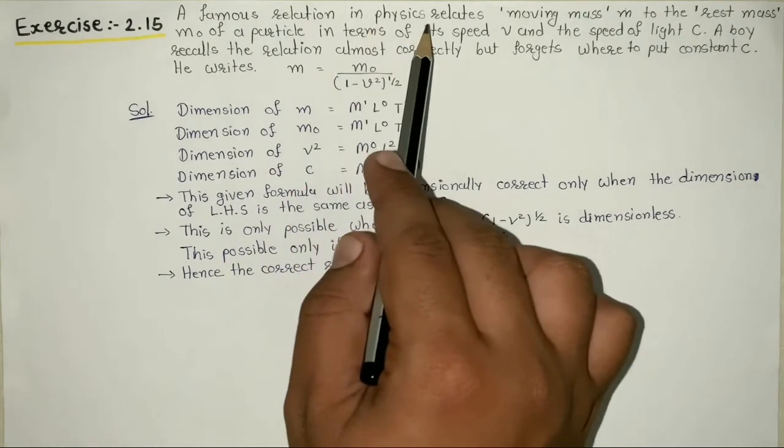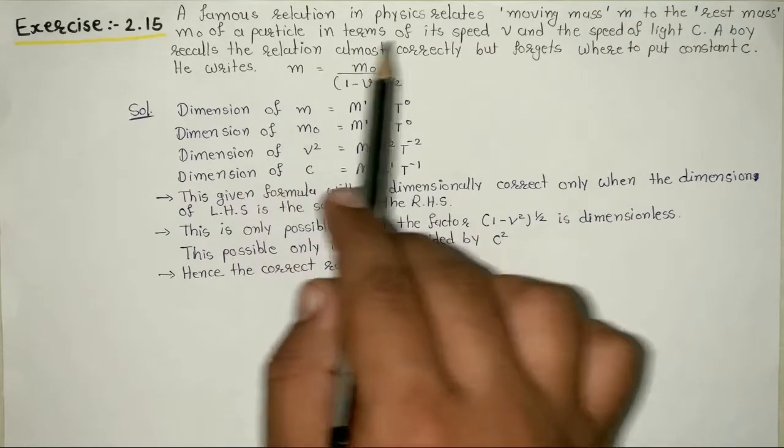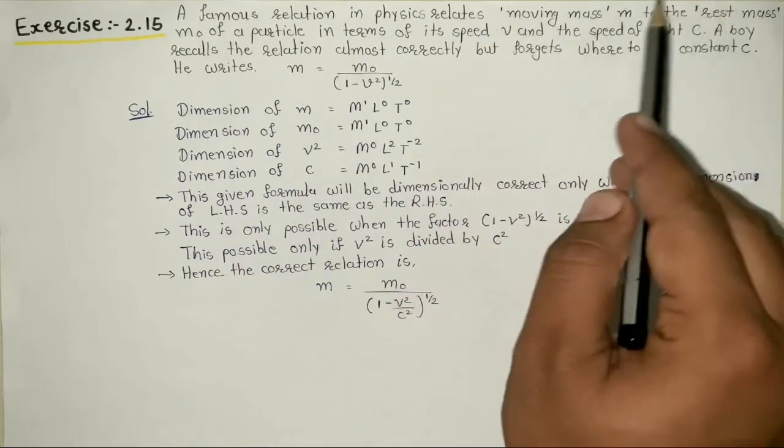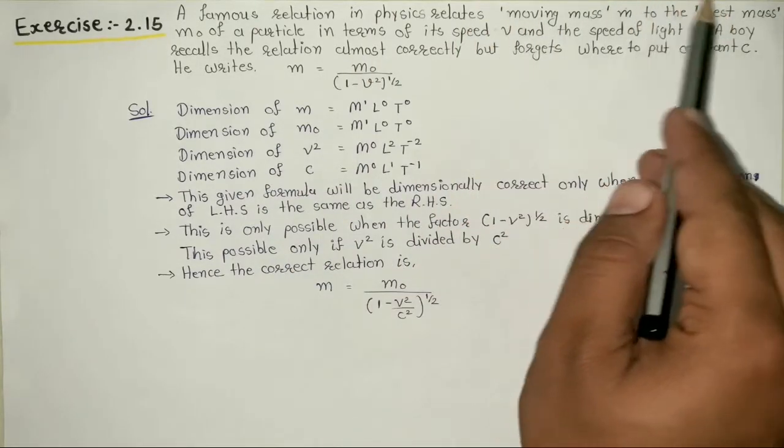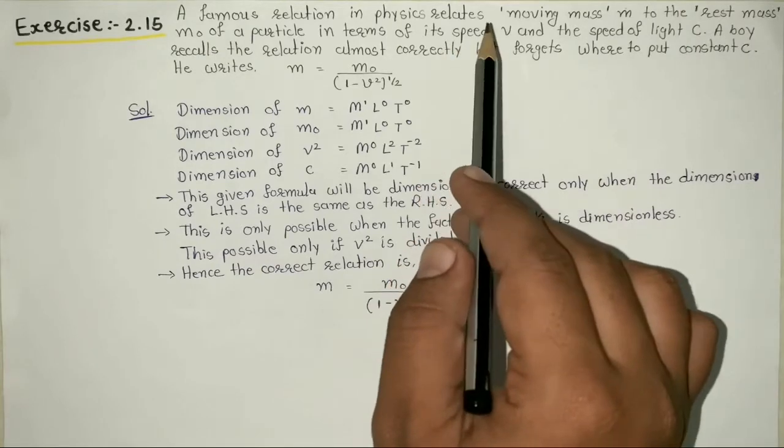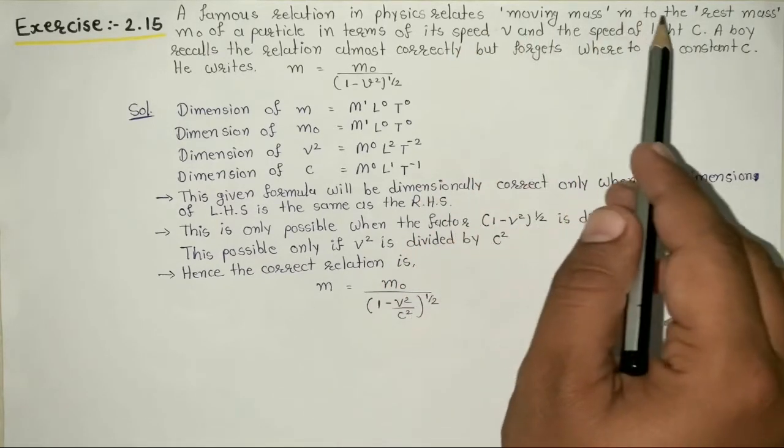This is the famous relation between particle moving mass and rest mass in terms of speed v and the speed of light c.